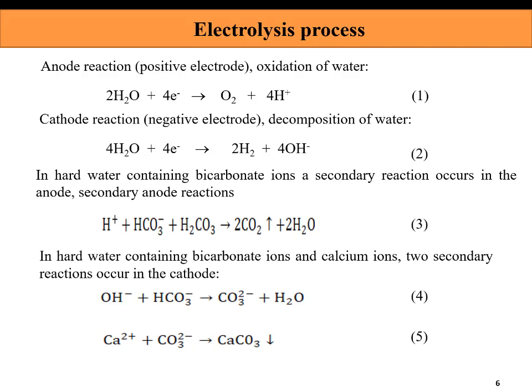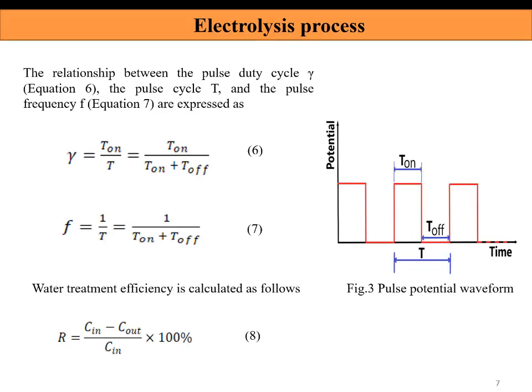Regarding the electrolysis process: at the cathode reaction, for water containing high bicarbonate ion content, the reaction process is described by equations 1 to 5. The relationship between the pulse duty cycle, pulse period, and pulse frequency are expressed in equations 6 to 8.